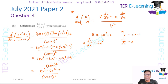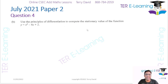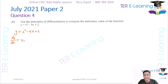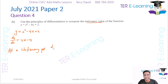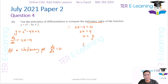So that takes care of part 2. The next one here — use the principles of differentiation to compute the stationary value of the function. So first things first, we have y is equal to x squared minus 4x plus 2. So dy/dx — we differentiate first — you're going to get 2x minus 4. Now if we want to find a stationary value, at a stationary point dy/dx is equal to 0. So therefore we're going to put 2x minus 4 equal to 0. 2x is equal to 4, and therefore x is 4 over 2, so x is equal to 2.